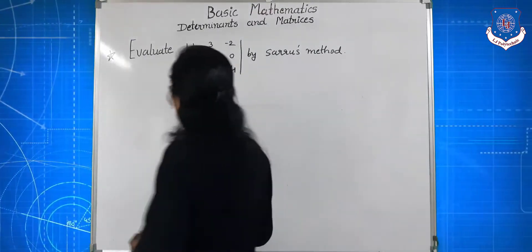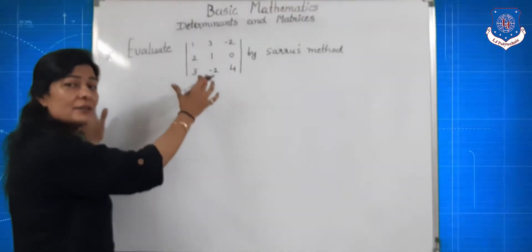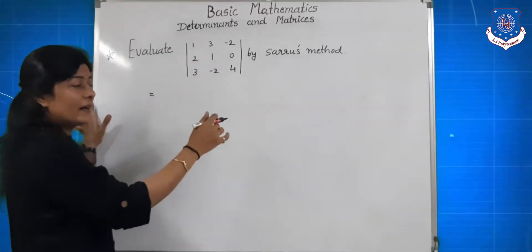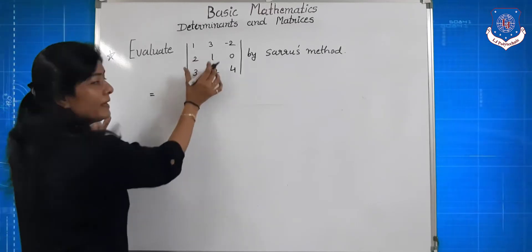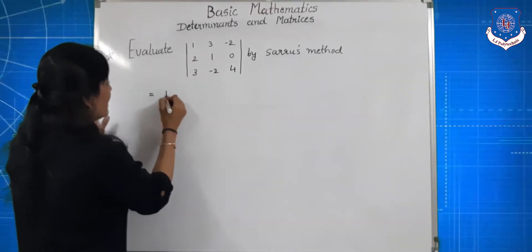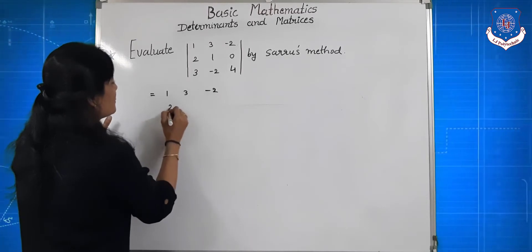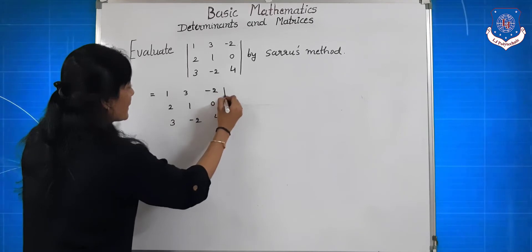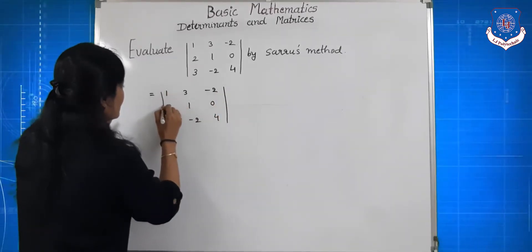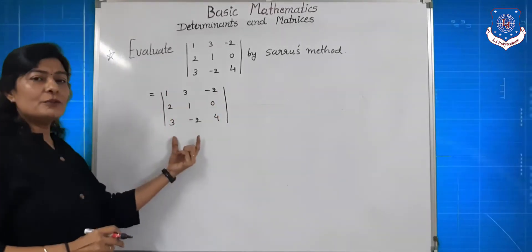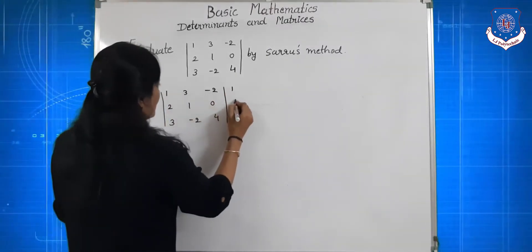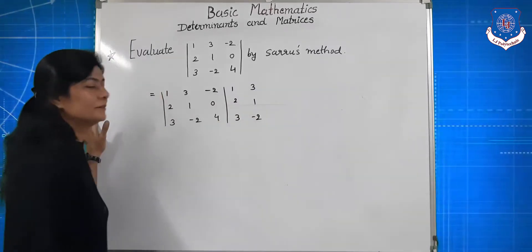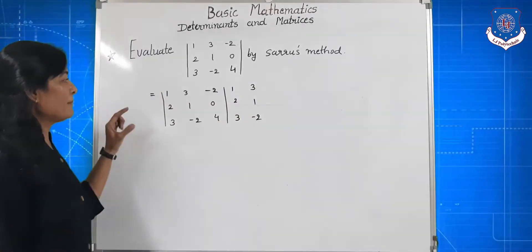Is method mein aapko pehle kya karna hai? Jo first determinant ki pehli two columns hain, unko repeat karna hai — phir se likhna hai. So given determinant is: 1, 3, minus 2 / 2, 1, 0 / 3, minus 2, 4. Ab first jo two columns hain — column 1: 1, 2, 3 and column 2: 3, 1, minus 2 — unko repeat karke likhna hai.